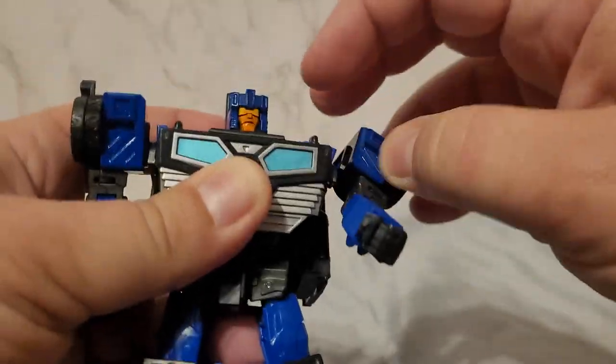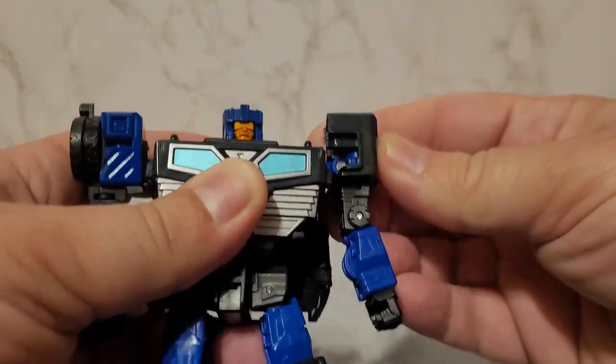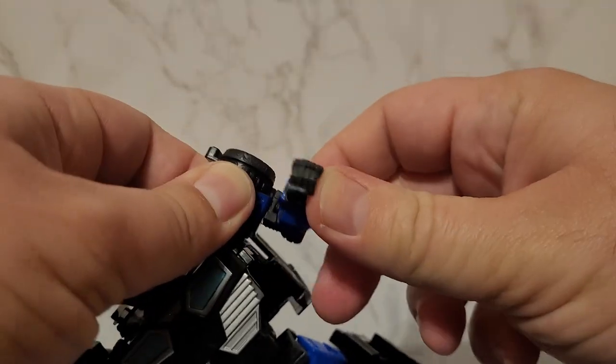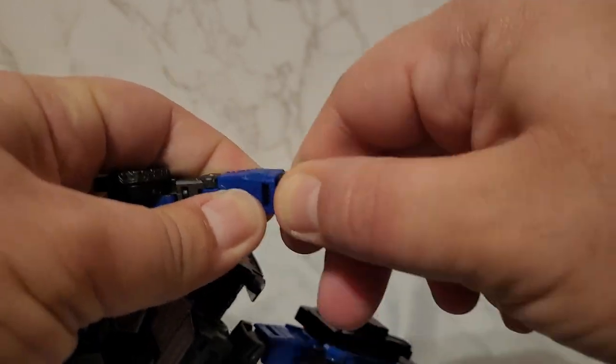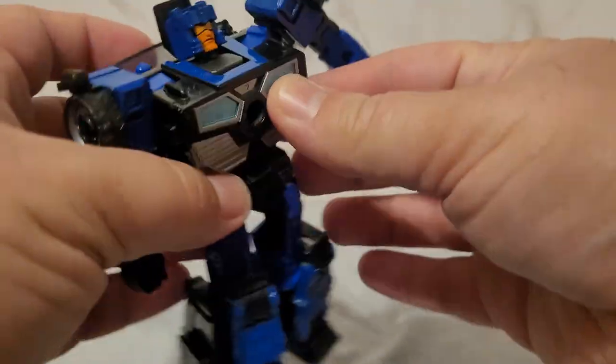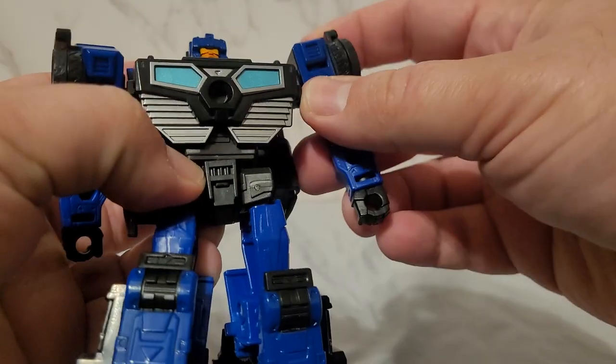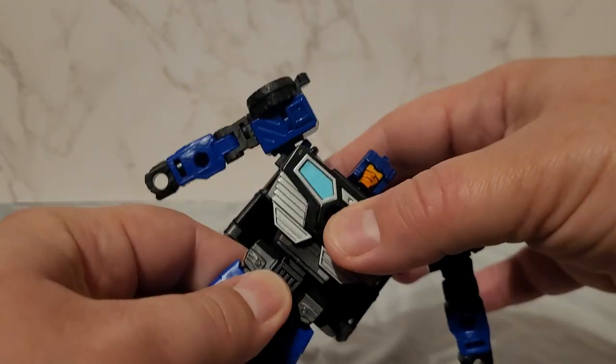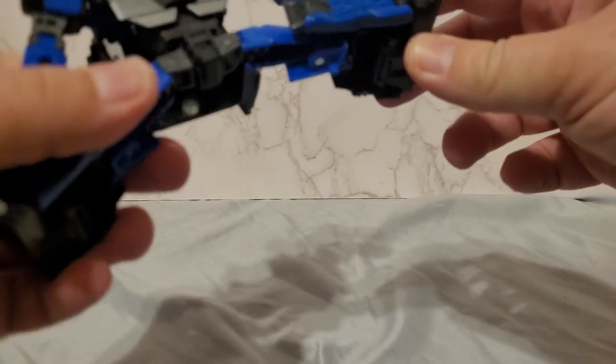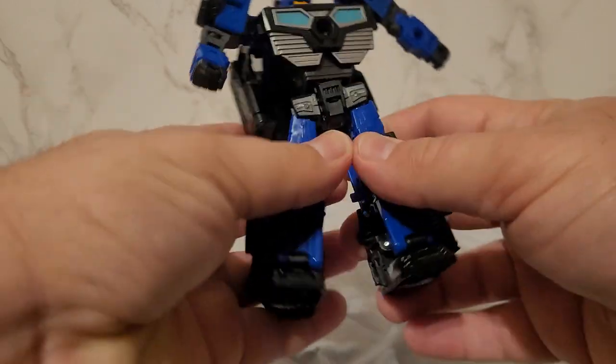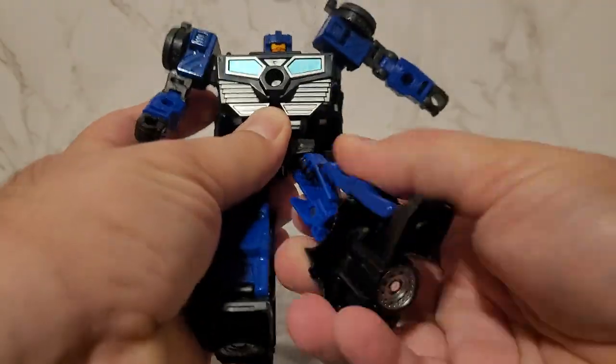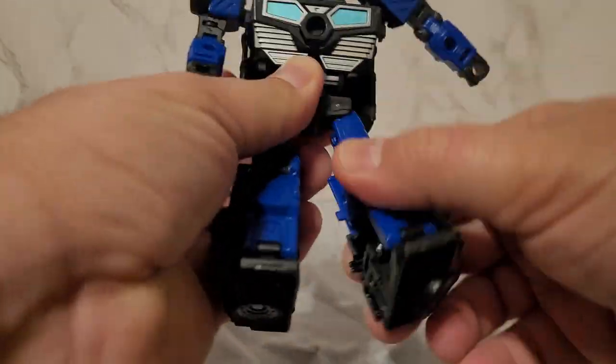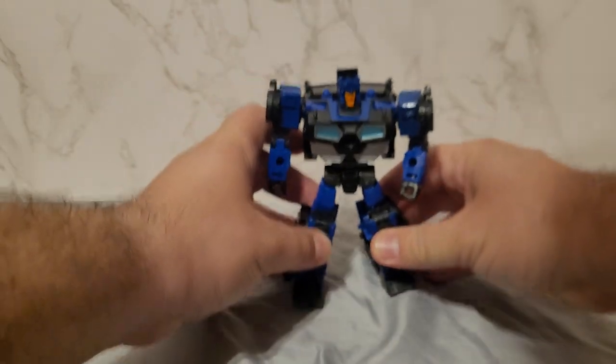Arms have a hinge there so they go up and down, they go all around, they technically have an extra hinge here so they can go in and out as well as a swivel there, bend at the elbow and a swivel on the wrist. This little chest piece isn't a very strong connection so it keeps popping off. Has a waist, legs can go out that far, forward, back, swivel there, bend at the knee and an ankle which is always appreciated.